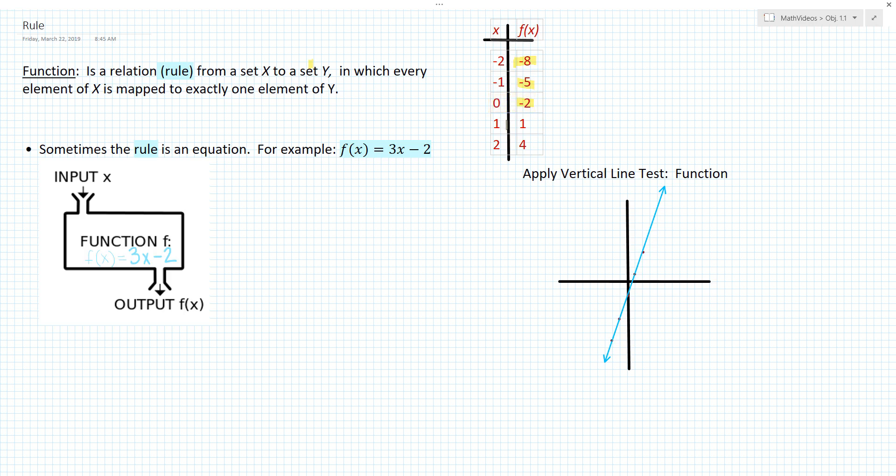Take our input 1, triple it, subtract 2, we get 1. And take 2, triple it, subtract 2, we get 4.